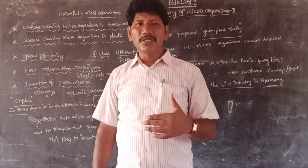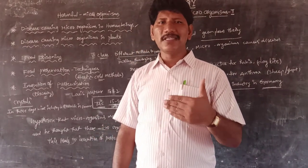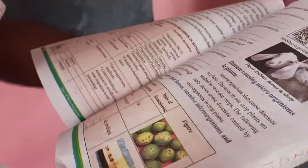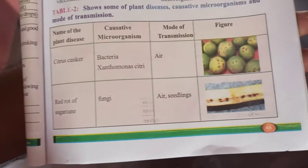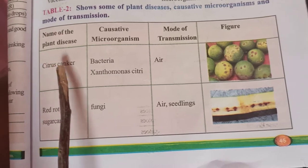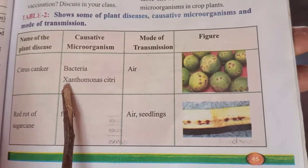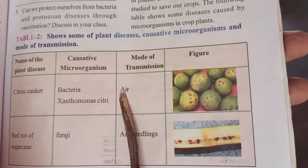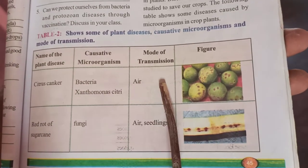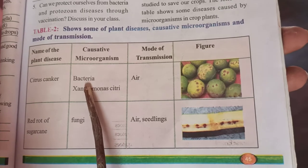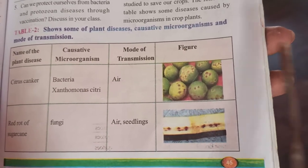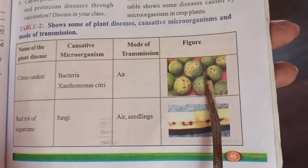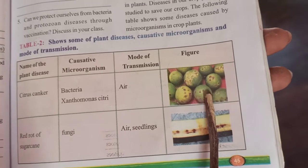Microorganisms not only affect human beings but also cause diseases in plants. In the textbook page number 45, table number 2, the first plant disease is citrus canker. The causative microorganism is the bacterium Xanthomonas citri. The mode of transmission is air, and the bacteria can spread from infected lemon to healthy lemon fruits.